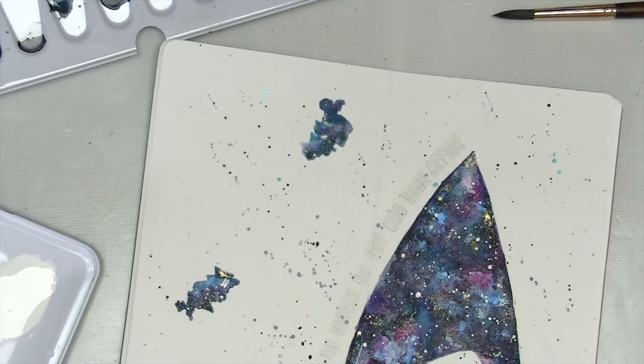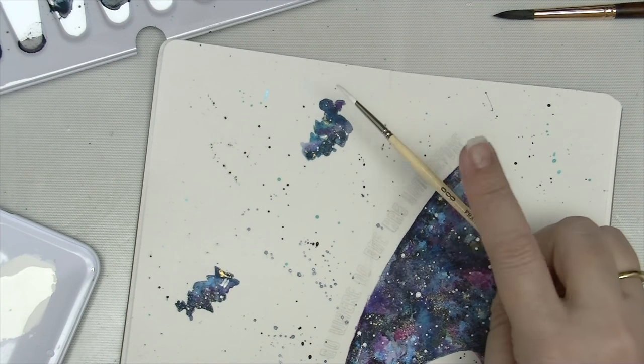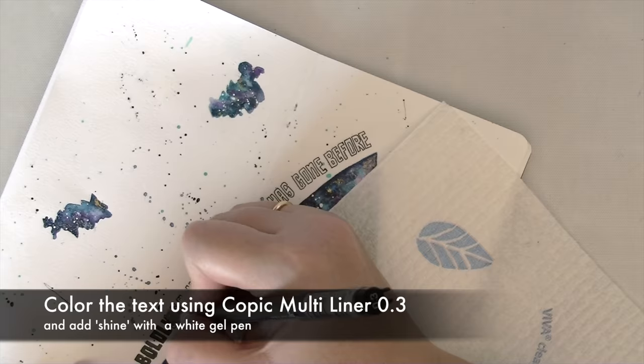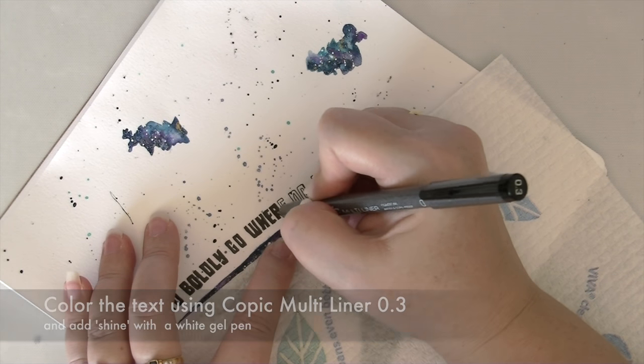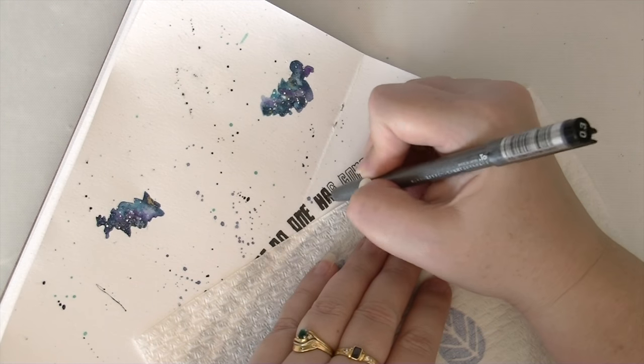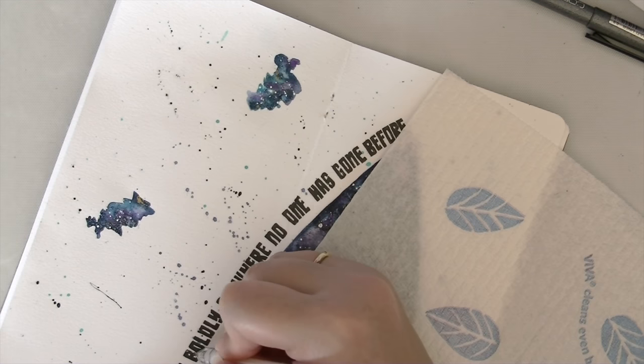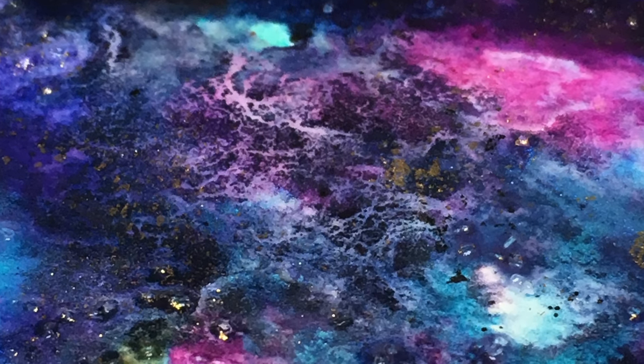And remove the mask. Once the mask is off add a few little splatters to the outside just so it's sort of unified. Then use a 0.3 Copic Multiliner to color in your text and a white uniball pen to add some highlights.